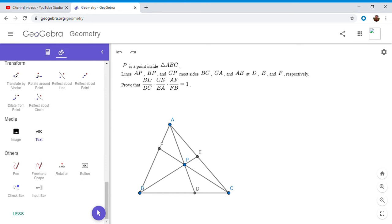P is any point inside a triangle ABC. And then you draw the three Chevians through point P to the opposite side. So AP meets BC at D, BP meets AC at E, and CP meets AB at F. So it's a very symmetrical arrangement. And we want to show that BD over DC times CE over EA times AF over FB equals one.